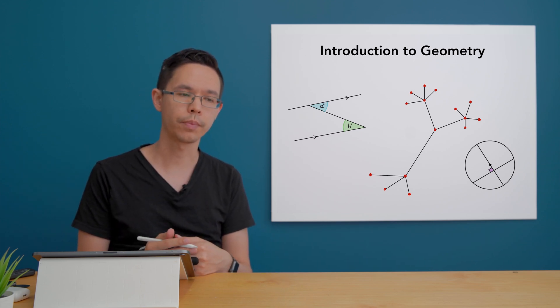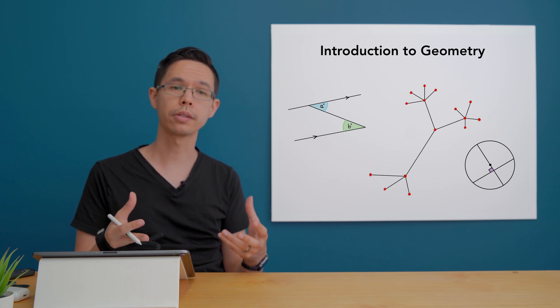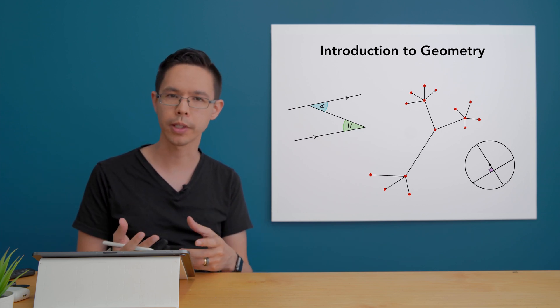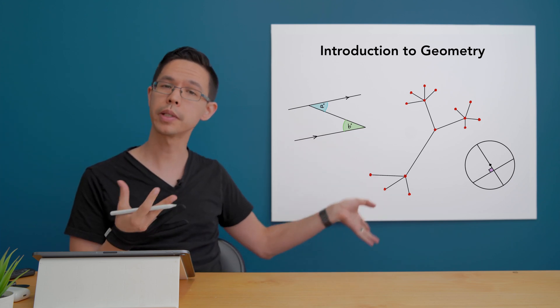So one thing that geometry can be useful for is to map out something that forms a network. Now let's start with this little diagram here in the middle it looks a bit like a tree.